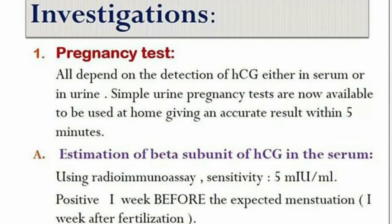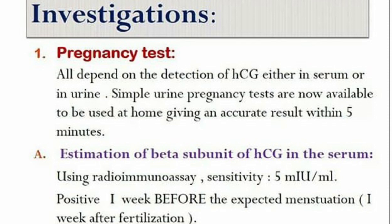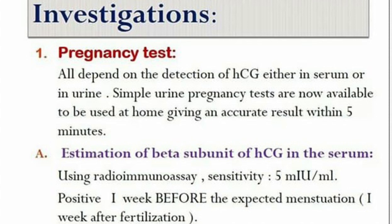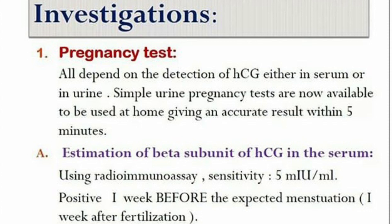Now let's discuss investigations. Number one is the pregnancy test, which depends on the detection of HCG — human chorionic gonadotropin hormone — either in the serum or in urine. Simple urine pregnancy tests are now available to be used at home, giving an accurate result within five minutes, and they can be bought from the nearest supermarket or pharmacy.